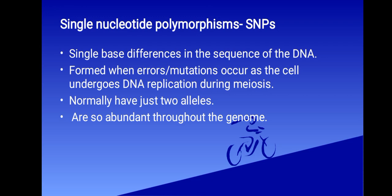Next we're going to discuss single nucleotide polymorphisms (SNPs). The simplest type of polymorphism is the SNP, which is a single base difference in the sequence of DNA. SNPs are formed when errors or mutations occur as the cell undergoes DNA replication during meiosis.